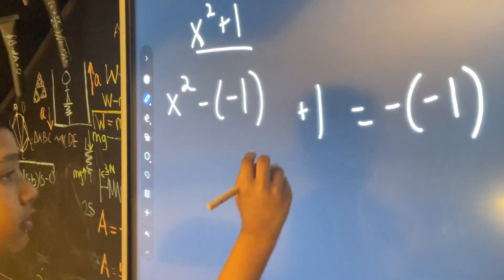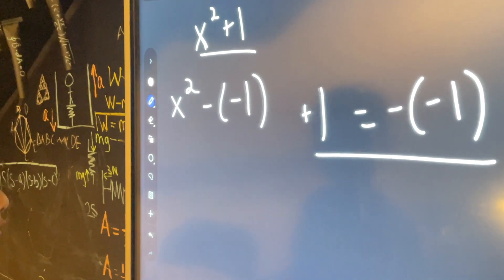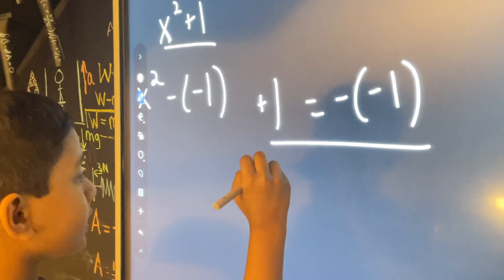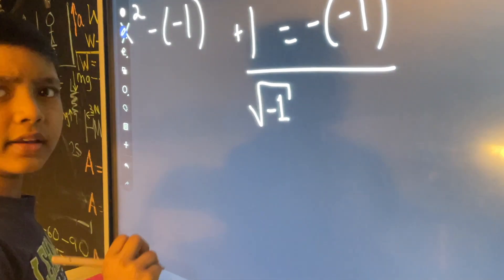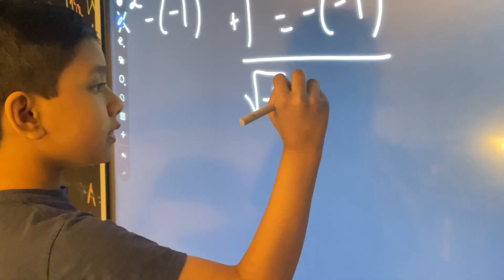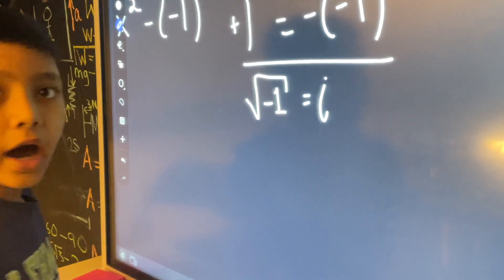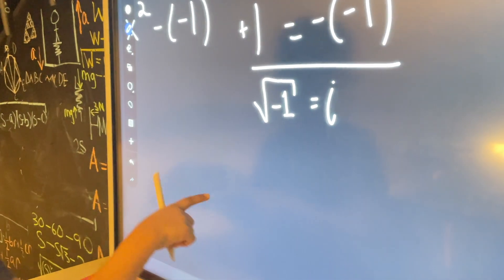Now, if you know imaginary numbers, then you would know that if you took the square root of negative one, it would give you the imaginary number i. We write it like this, not like a normal i.